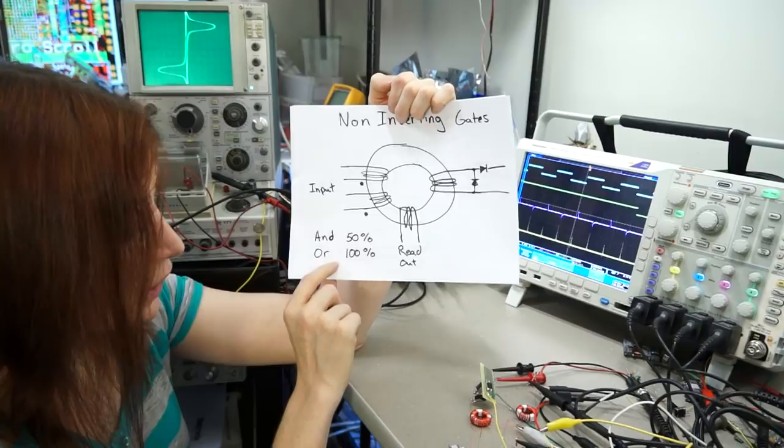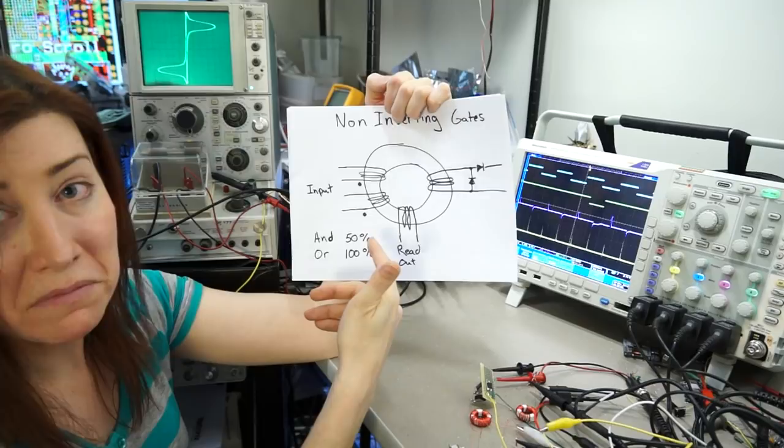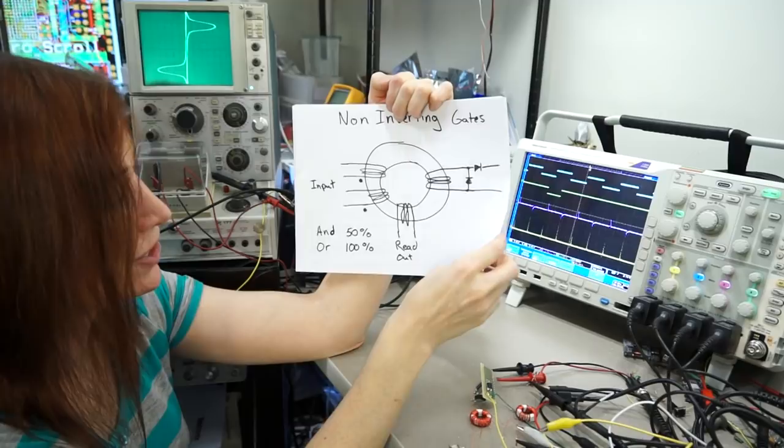For an OR function, either input, if it's pulsed, it will set the polarization of the magnet, remnant magnetization. So you just wind it so that it functions in that way.